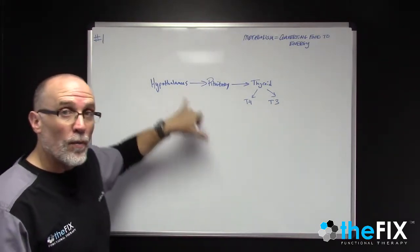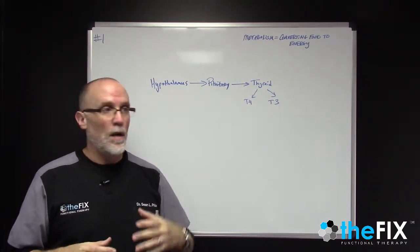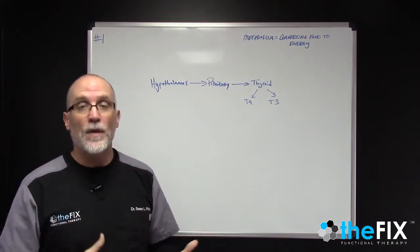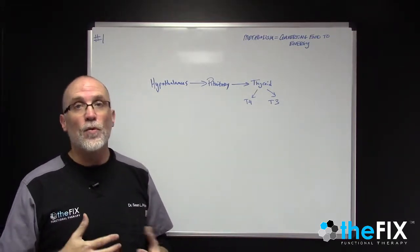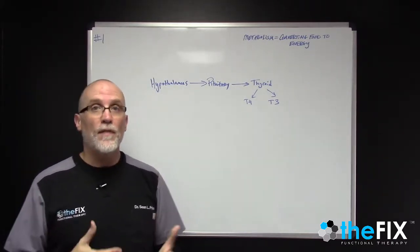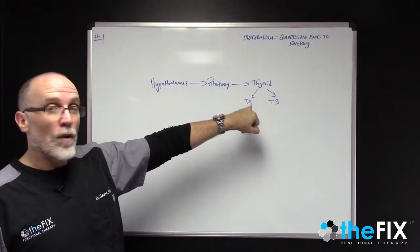The hypothalamus is the part of the brain that picks up on the environment. So it picks up on if it's daylight or if it's dark outside so you should be asleep or awake. It controls your sleep-wake cycle, your sexual desire, your appetite, your body temperature. It controls all of these different things. So the hypothalamus picks up on T4 and T3.